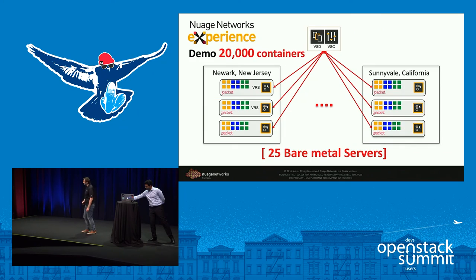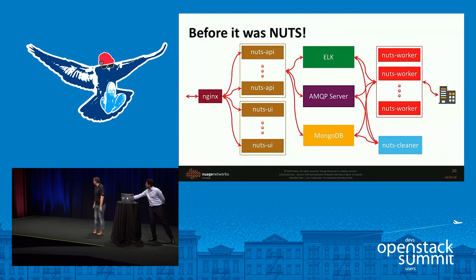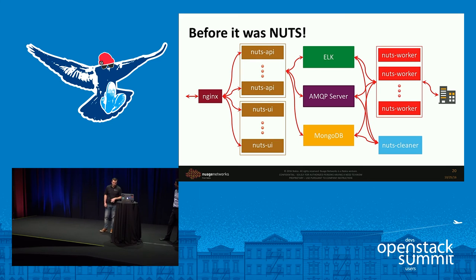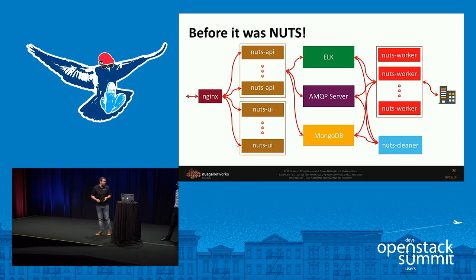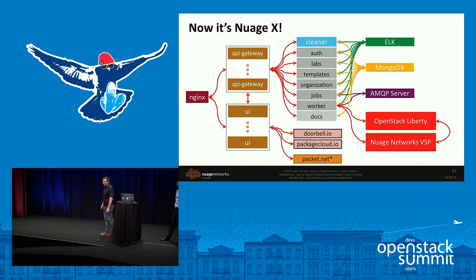About one year ago we decided to create a demo platform for our partners and started building a service based on OpenStack Juno and the Nuage VSP. A few weeks after releasing it internally, we saw it was a great idea to share it with employees so they could deploy demos on demand in front of customers. One year later we had deployed almost 14,000 VMs on this platform, with around 300 internal users. It was called NUTS — no joke — and now it's NuageX.